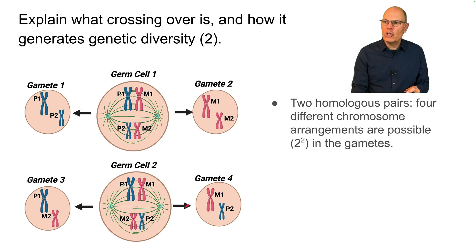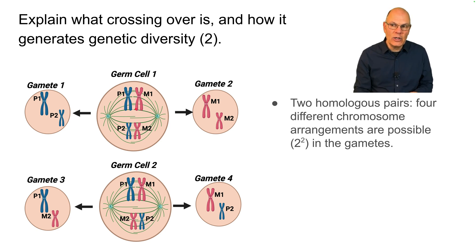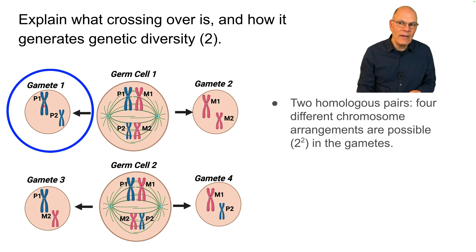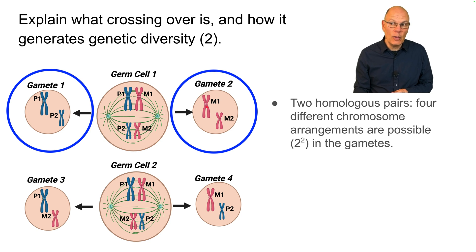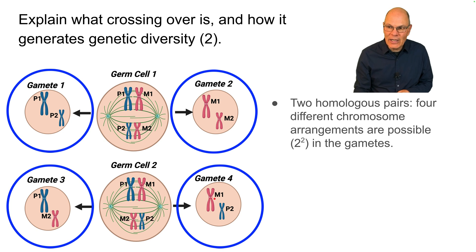With two homologous pairs, four different chromosome arrangements are possible — that's two squared — in the gametes. During anaphase we pull these homologous pairs apart. One possible arrangement gives a gamete with paternal chromosome one and paternal chromosome two, and another gamete with maternal chromosome one and maternal chromosome two. Another arrangement gives a gamete with paternal chromosome one and maternal chromosome two, and the other with maternal chromosome one and paternal chromosome two.